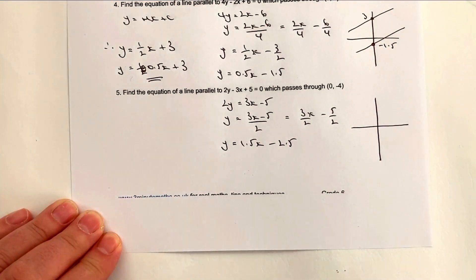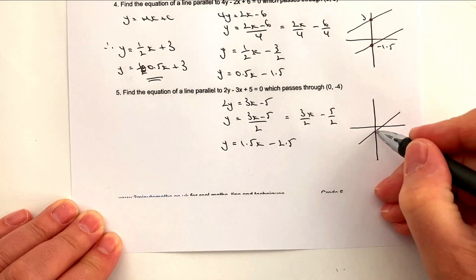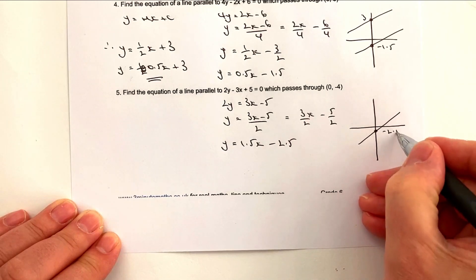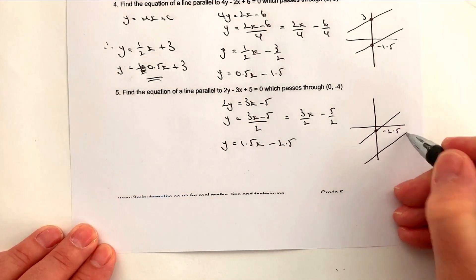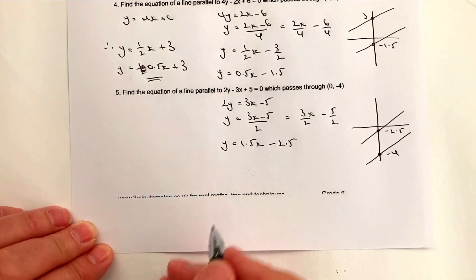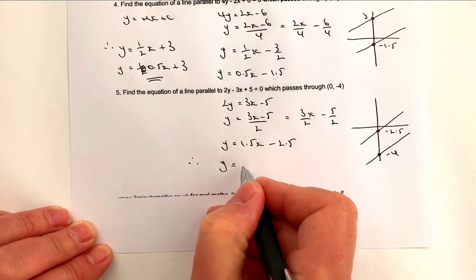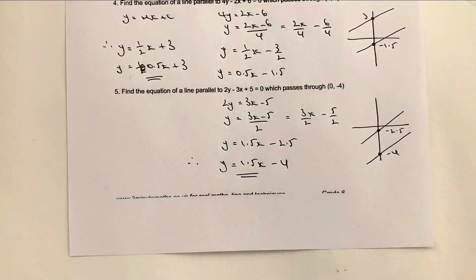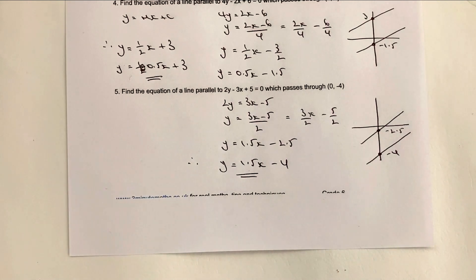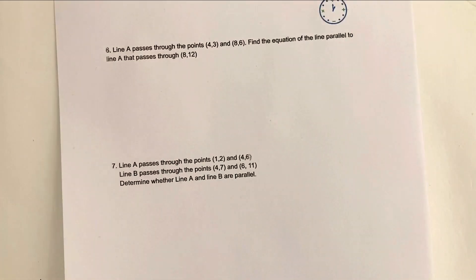Converting to decimals: y = 1.5x − 2.5. We've got a gradient of 1.5 going through y-intercept −2.5. However, they want us to put it through minus 4, so the answer is y = 1.5x − 4: same gradient, but this time minus 4. Please add a comment below if you're not sure about anything. Three-minute maths is becoming 12 or 13 minutes, but the idea is you learn these things quickly and keep practising.